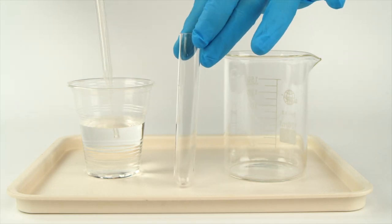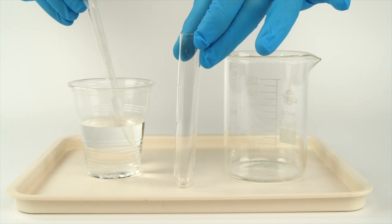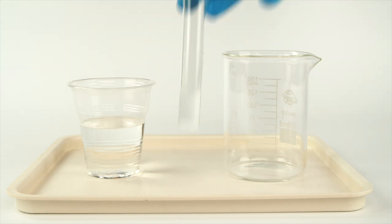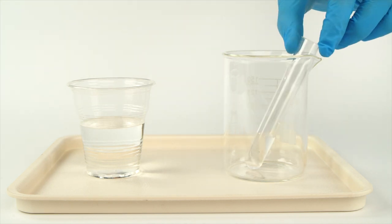Pour 2 to 3 milliliters of water into the test tube using the pipette. Try to avoid getting water on the upper area of the test tube. Set the test tube vertically in the beaker.